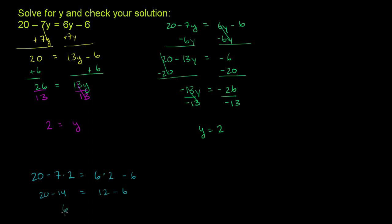20 minus 14 is 6. 12 minus 6 is 6. 6 is indeed equal to 6. So it all checks out.